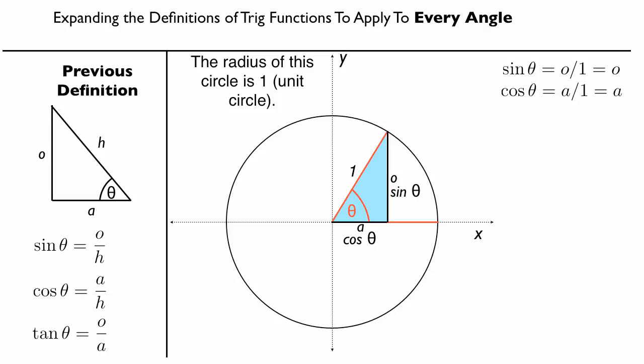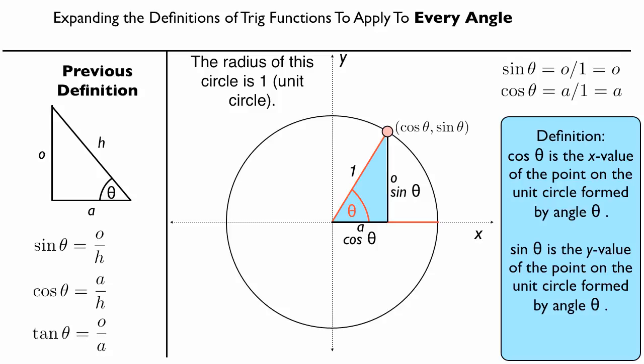Why are we doing all this? The most important thing when discussing the unit circle is the point where the extended line meets the unit circle. At that point, the coordinates are cosine theta and sine theta — the point extends in the x-direction by cosine theta and up by sine theta. This motivates our definition: cosine theta is the x-value of the point on the unit circle formed by angle theta, and sine theta is the y-value of that point.